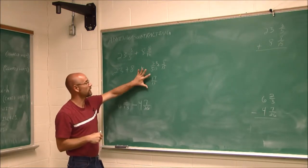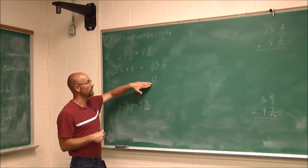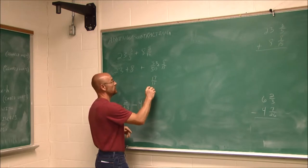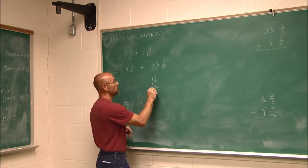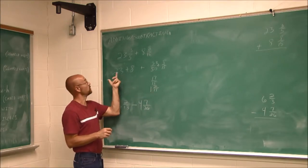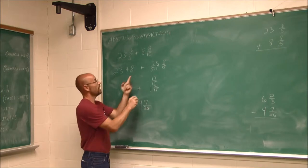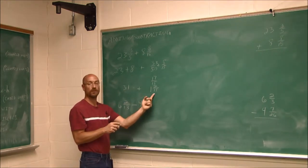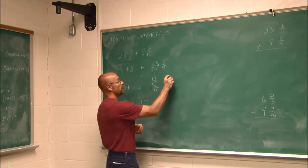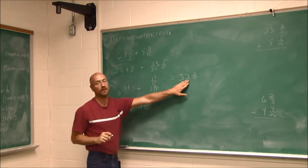Now, the top is bigger than the bottom, so let's write it as a mixed number since we started working with mixed numbers. 15 goes into 17 once with a remainder of 2 — my remainder remains over the divisor — giving 1 and 2/15. Then 23 plus 8 is 31, and 31 plus 1 and 2/15 means I combine the whole numbers: 31 and 1 is 32, giving us 32 and 2/15 as our mixed number.